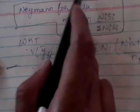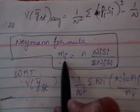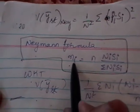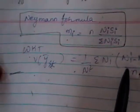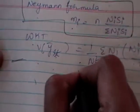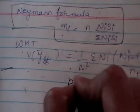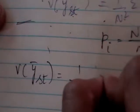To get this expression, we are going to use small ni in place of wherever we find small ni. We substitute the Neyman allocation formula into this variance expression and on simplification, we will get the variance of Y-bar stratified under Neyman, where Pi is nothing but Ni by N.